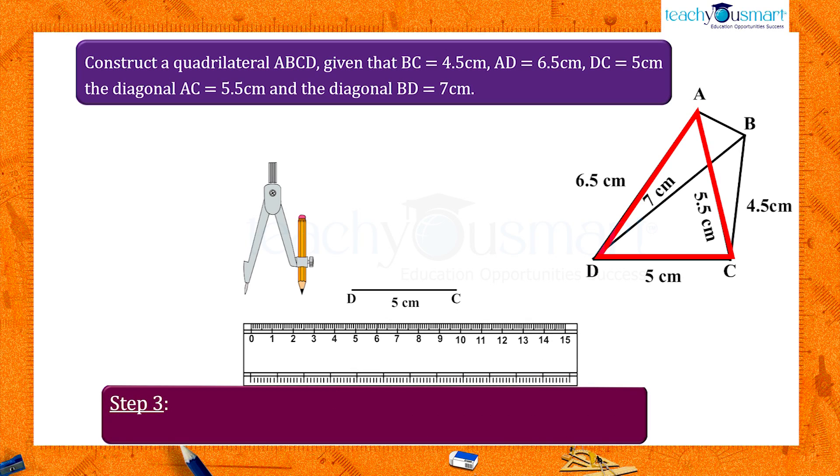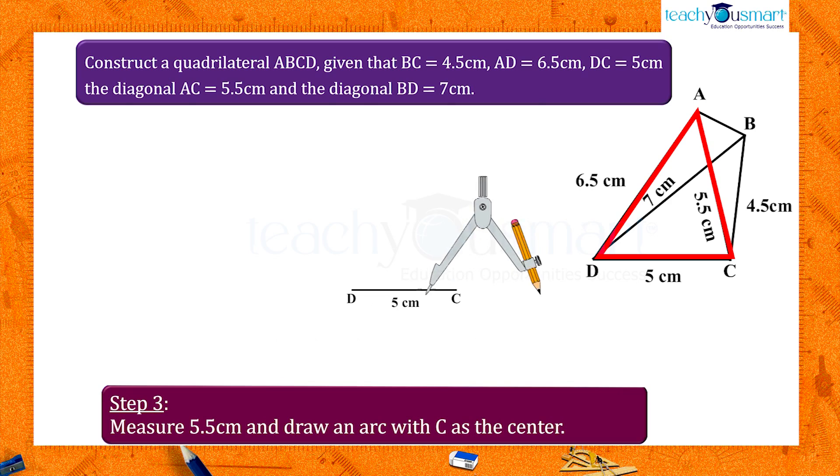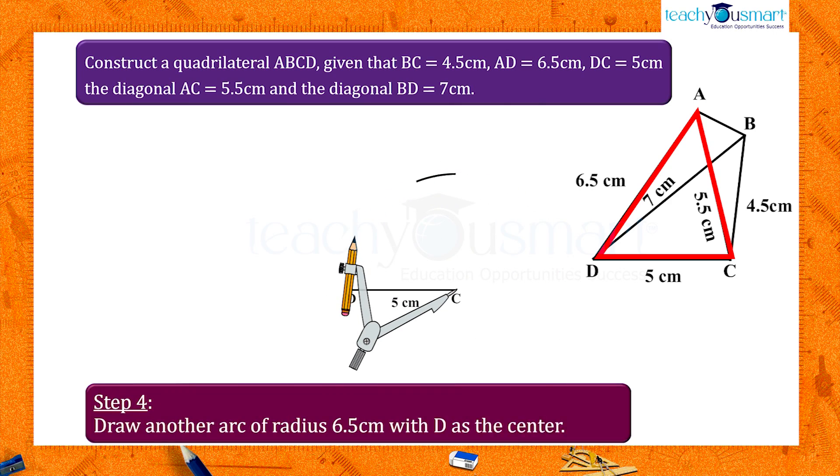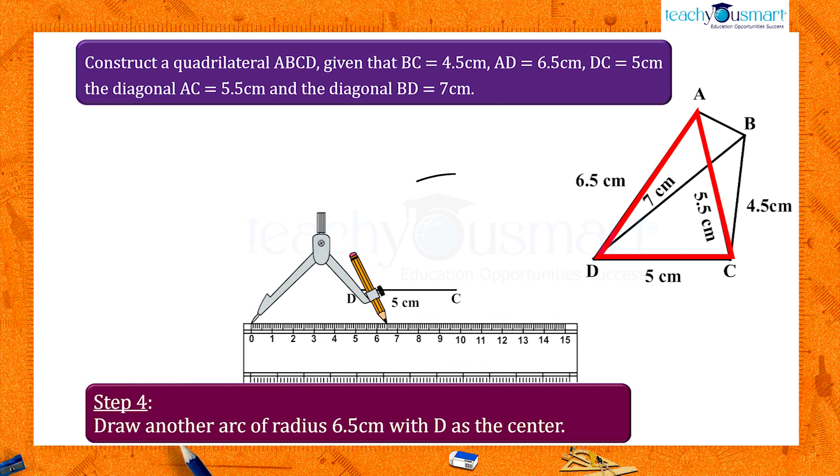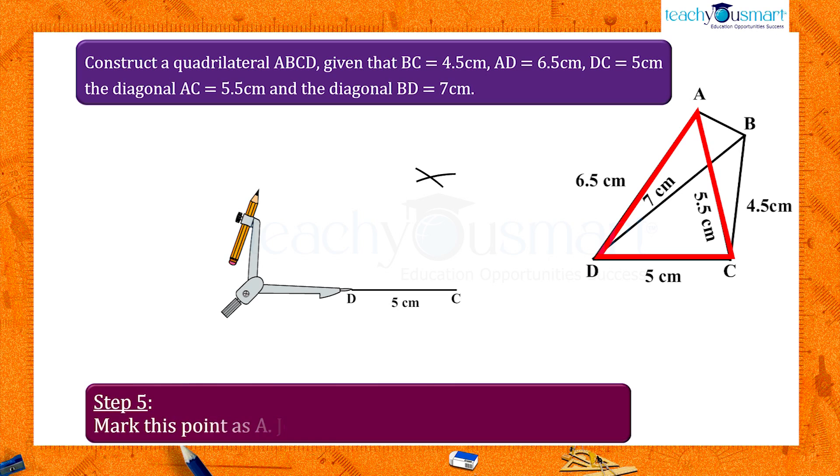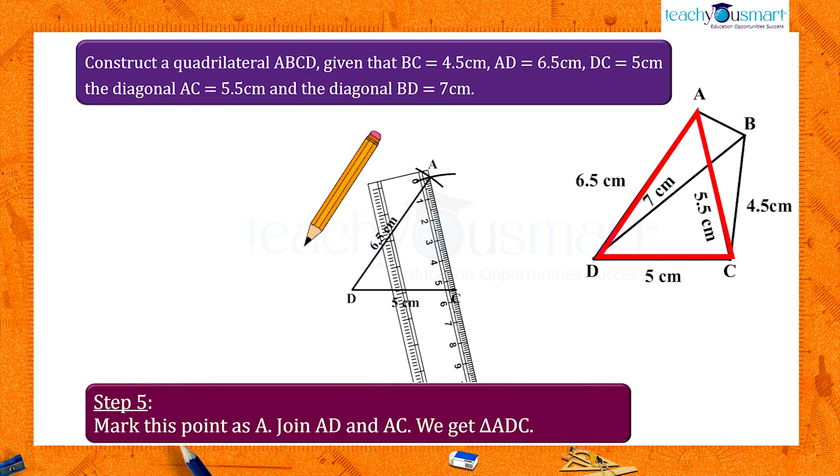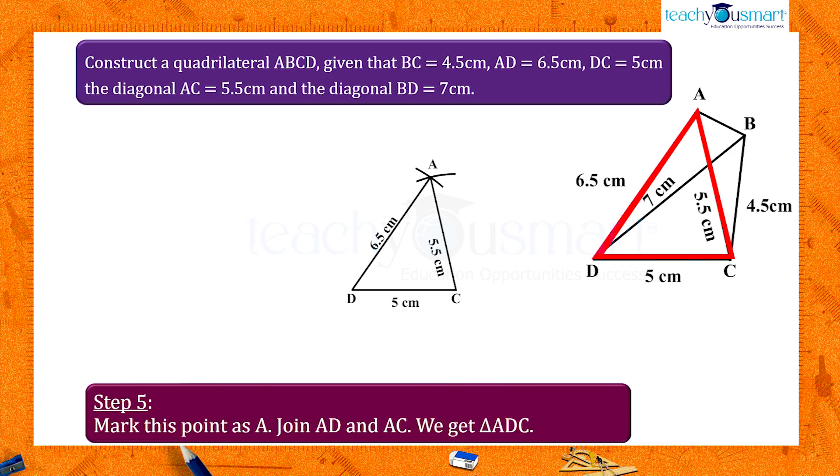Now take a compass, measure 5.5 centimeters, and draw an arc with C as the center. Draw another arc of radius 6.5 centimeters with D as the center. Mark this point as A. Now join AD and AC. We get triangle ADC.